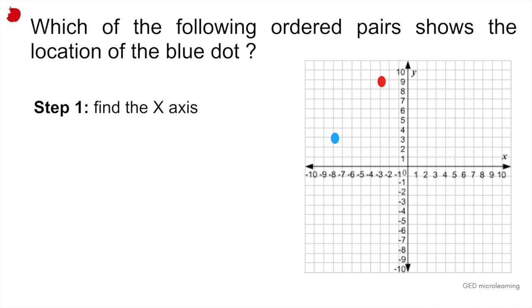So what you would do: find your blue dot and follow the blue dot down until it hits the x axis. So it's hitting it at negative eight. So the x axis would be minus eight. Now what you're going to do, step two is find the y axis. So again, locate the blue dot and then follow it with your finger to the y axis, which is the vertical line. And it's hitting the axis at three. So your y axis is three.